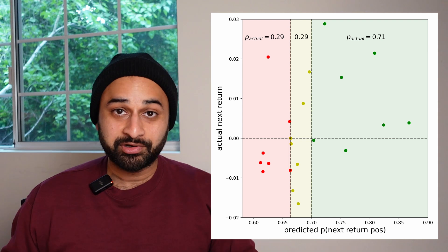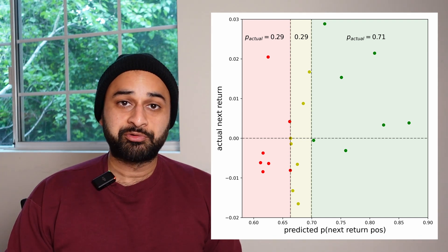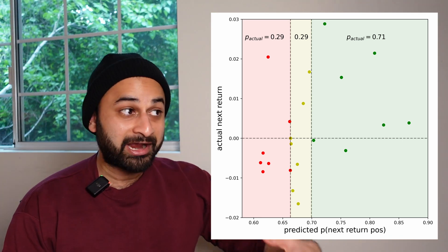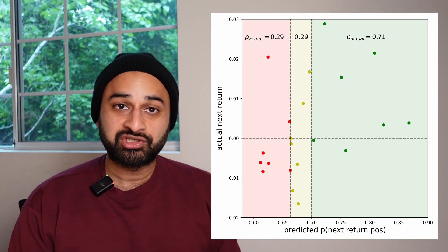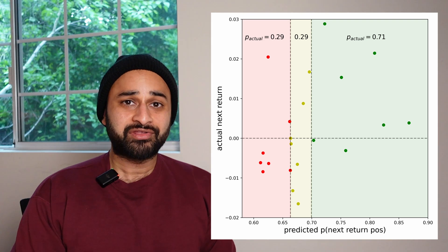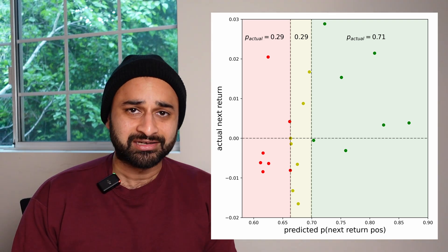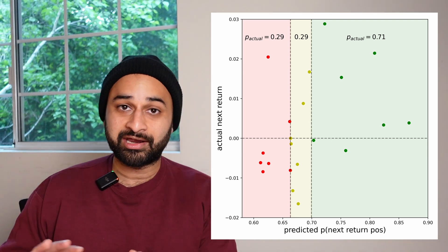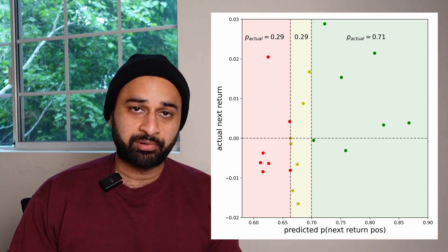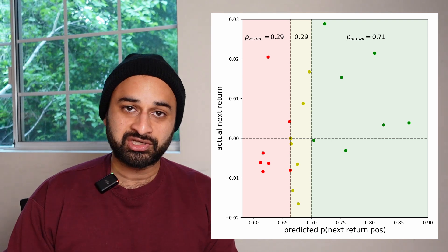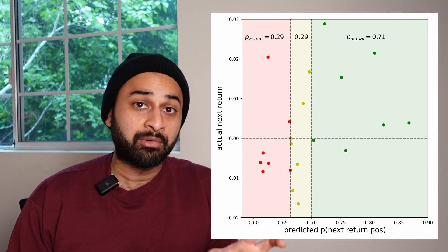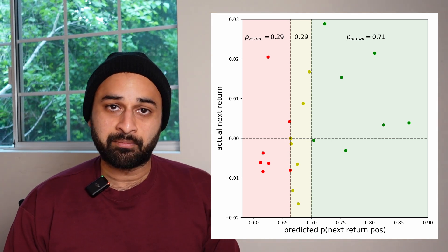And you can see that by looking at the green region here, where the predicted probability was between 70 and 90 percent. And if we ask the same question—what fraction of those points actually gave us a positive return—then the answer there is a whopping 71 percent. So if we had just set our threshold to be only included if it's in that green region above about 70 percent predicted probability of next day's return being positive, we probably would have done a lot better and possibly even beat the ARMA model using the LSTM model.